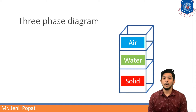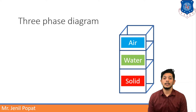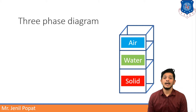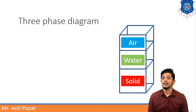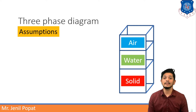In a soil mass, the volume of solid particles is maximum. If the soil is fully dry, there will be solids plus air, and if the soil is fully saturated, there will be water plus solids. But in general, a soil mass consists of all three things: solids, water, and air particles. All three particles are blended together to form a complex material, i.e. soil. Let us analyze that complex material using the three-phase diagram.